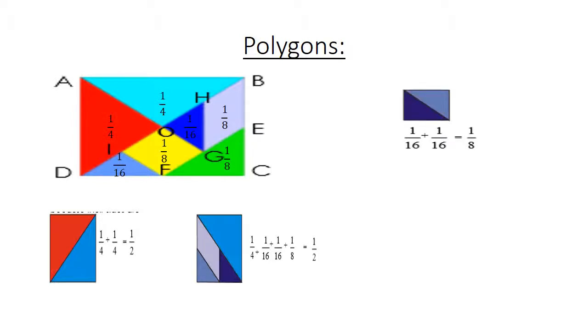We have the two triangles, 1 over 16 plus 1 over 16. And then we have the green triangle, 1 over 8, plus the light blue triangle, 1 over 16, plus the dark blue triangle, 1 over 16, equals 2 over 8.